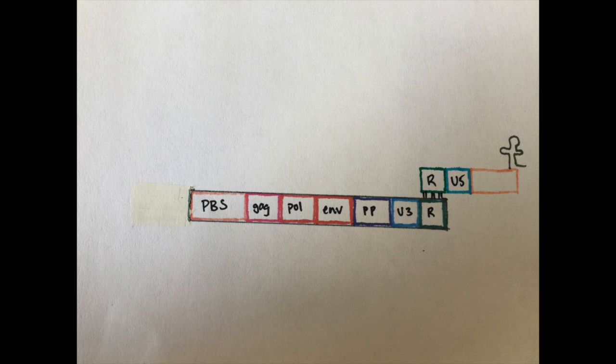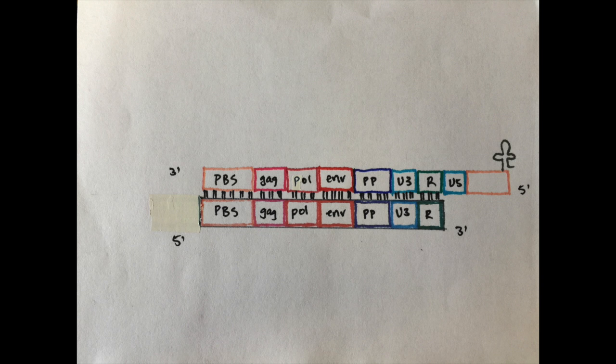The primer then jumps to the 3 prime end of the viral genome and the newly synthesized DNA strand hybridizes to the complementary region R on the RNA.